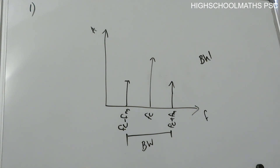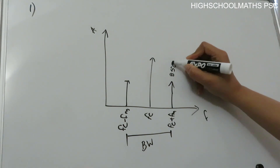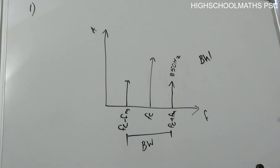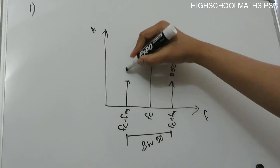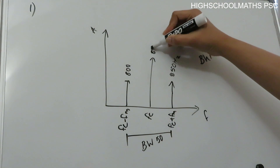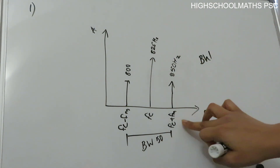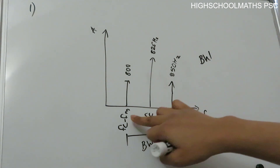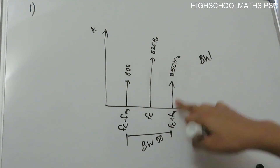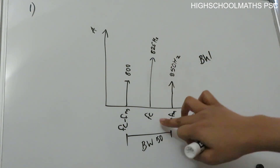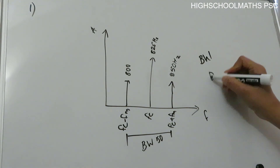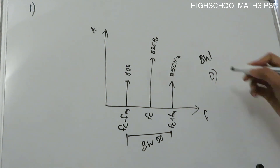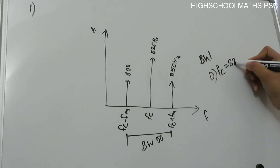The highest frequency component of the AM wave is 850 Hz, and the bandwidth is 50 Hz. The middle frequency — the carrier frequency — is 825 Hz. So 850 is Fc plus Fm, the higher frequency component. Since bandwidth is 50 Hz, 850 minus 50 equals 800, and the carrier frequency is 825 Hz. The answer is Option D.